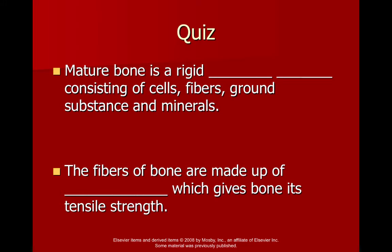A little quiz: mature bone is a rigid connective tissue consisting of cells, fibers, ground substance, and minerals. The fibers of bones are made up of collagen, which gives bone its tensile strength — meaning the ability to hold itself together.